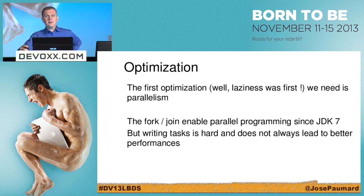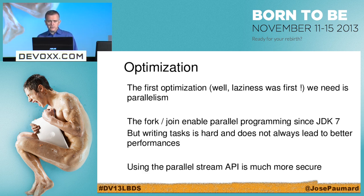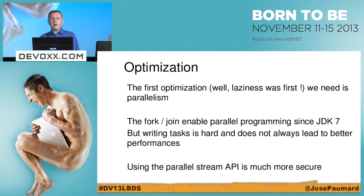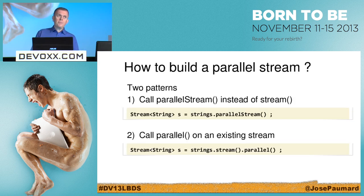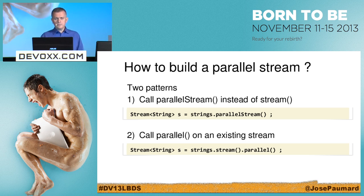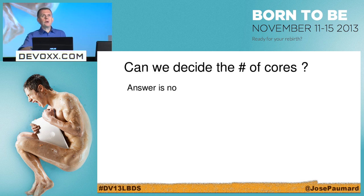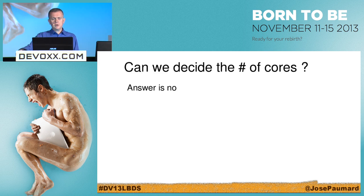Going parallel does not always bring better performance — it is not magic dust. There are overheads you have to pay, and at the end of the day you might go slower. Using the parallel stream API is much safer to use. How can I build a parallel stream? Either I call parallelStream() to build my stream, which gives me a parallel stream directly, or I call parallel() on an existing stream. Very simple.